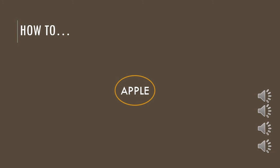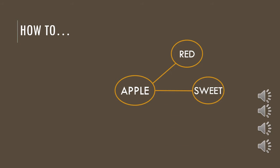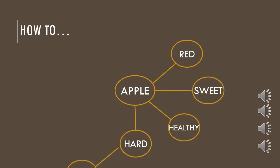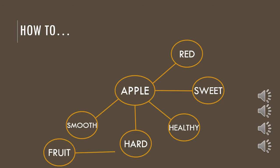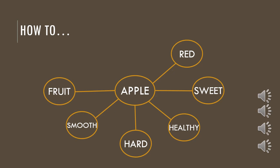Let's quickly think of words that describe an apple. An apple is, for example, red. Then we write red with a bubble around and connect it to the middle. An apple is also sweet. An apple is healthy. It is hard. When you touch it, it feels smooth. It is a fruit. Apples are fairly small. And it is a sphere shape.